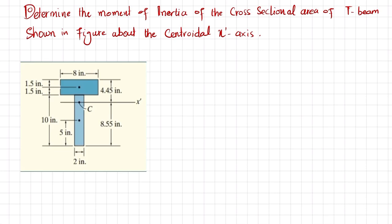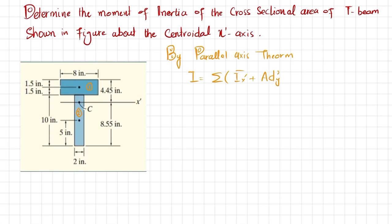We will solve this using two methods. In the first method, we take it as two elements — element number one and element number two — and apply the parallel axis theorem. The formula for that is the sum of Ix-dash plus A·dy², where d is taken in the y-direction.